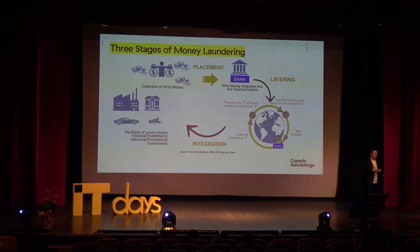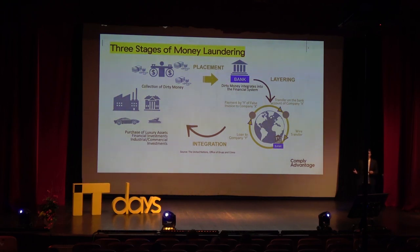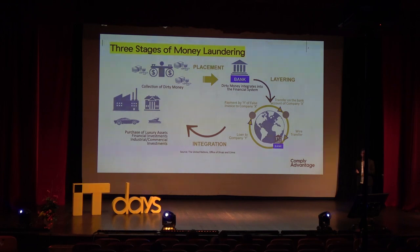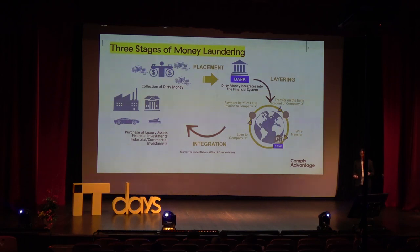That's where we get into layering — the stage where we obfuscate the funds and disconnect the money from where it came from. One of the most common ways is to move it around the globe. If you set up shell companies in different jurisdictions, have many accounts, and move money from one to the next in small parcels, it becomes very difficult for any single regulator to follow all those funds back to their origin. You also want to work through jurisdictions with very low anti-money-laundering protections.